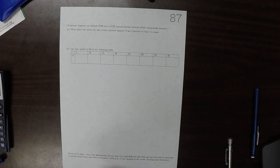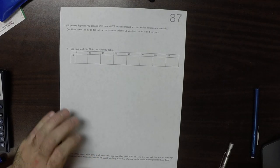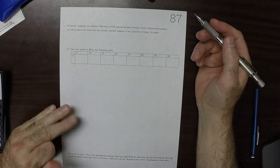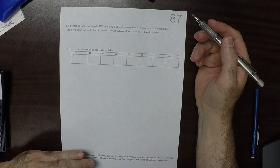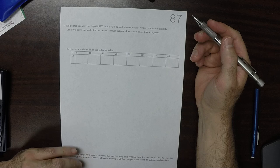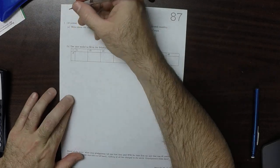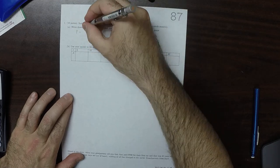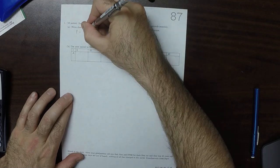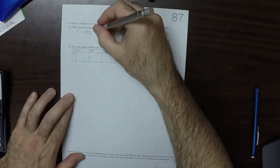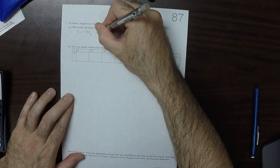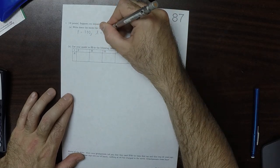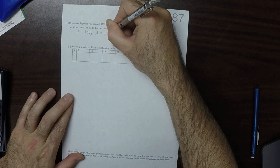This is the solution to written homework 87. So we've got P is $700, R is 0.082.